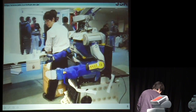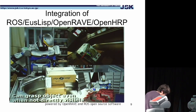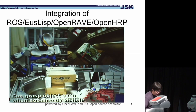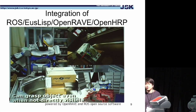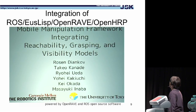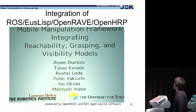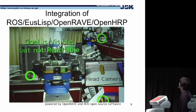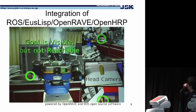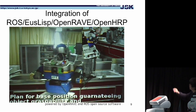This spring, a ROS researcher came to our laboratory for two months. We integrated ROS, RISP, open wave, and open HRP. Here, the robot tries to grasp an object.